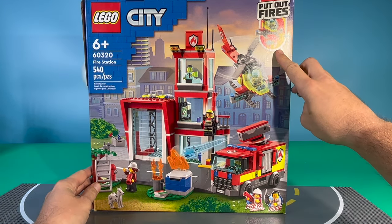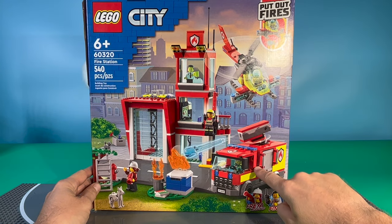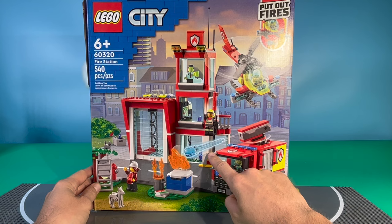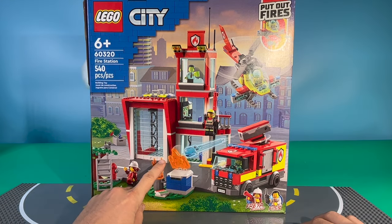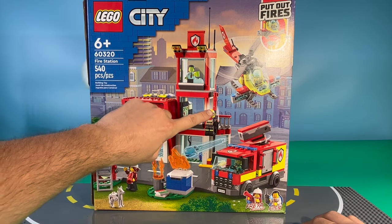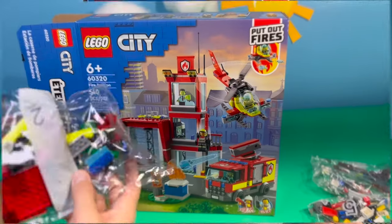This is the LEGO City Put Out Fires. It comes with a full fire truck with a cannon that shoots out water, a helicopter, a full fire station, and a fireman that goes down a flagpole. This thing is awesome! Let's get started. Here's our first bag. Let's see what's inside.